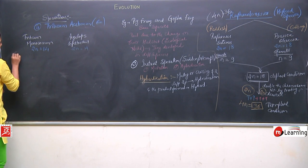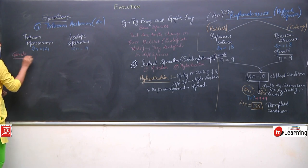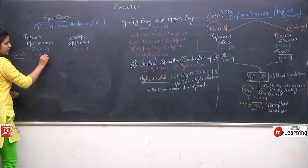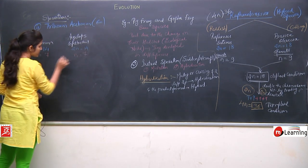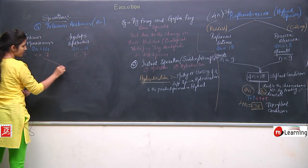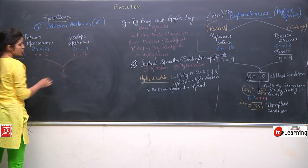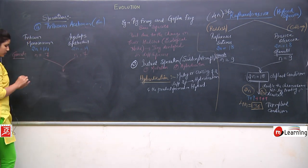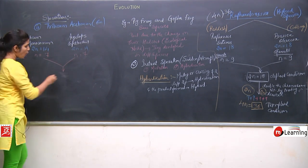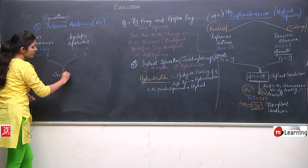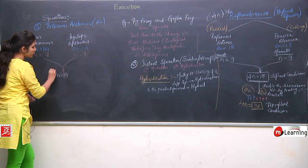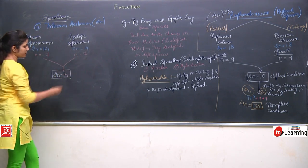At the time of gamete formation, they released n equals to 7 and n equals to 7, and when they crossed with each other, they formed one species in diploid condition with 2n equals to 14.